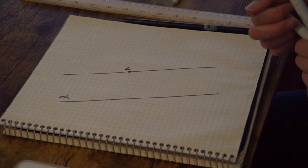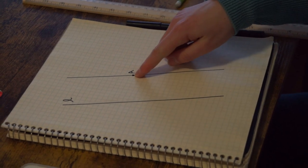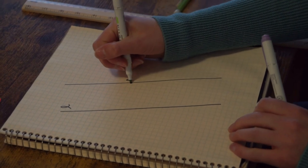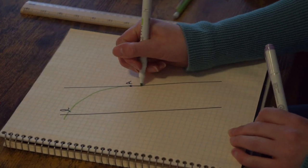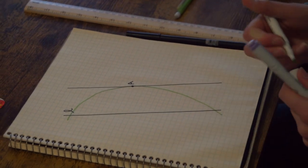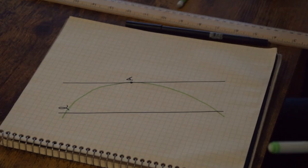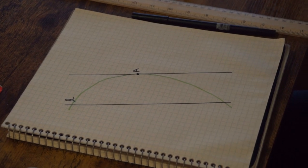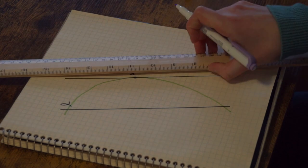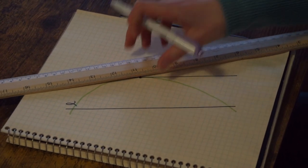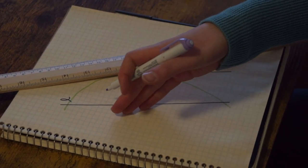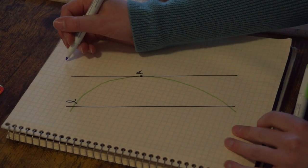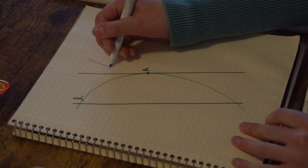So one way that it could fail is that we can't find a line that passes through A that does not intersect L, and that would mean that all lines through the point A would kind of curve in towards L. But on the other hand, it could fail if there's not exactly one line. So if there's many, and this would mean that we could sort of take the line passing through A and rotate it, and it still would not intersect the line L. And so in that way, that would mean that the line would sort of have to curve away from L.